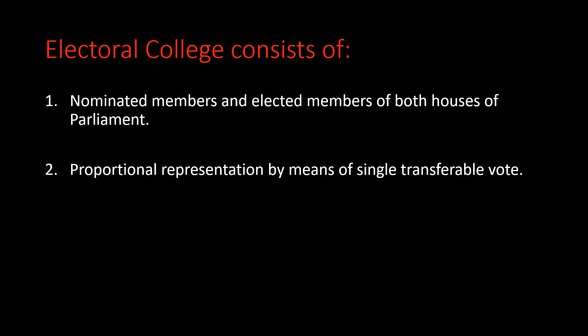The Electoral College consists of the nominated members and elected members of both Houses of Parliament, that is Lok Sabha and Rajya Sabha. Secondly, proportional representation by means of single transferable vote. Single transferable vote is a voting system designed to achieve proportional representation, where each voter casts a single ballot on which candidates are ranked.